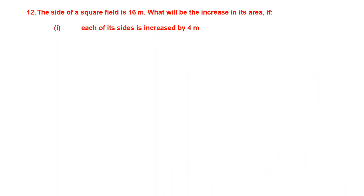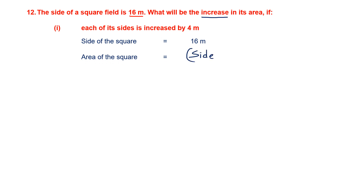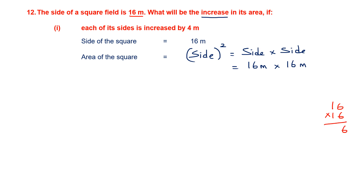Question 12. The side of a square field is given. We have been asked to find the increase in area if each of its sides is increased by 4 meters. The first step is finding the original area. Side of the square is 16 meters. Area equals side squared, which is side into side: 16 meters into 16 meters. 6 sixes are 36 carry 3, 6 ones are 6 plus 3 is 9. Second step: 1 six is 6, 1 one is 1. Adding up: 6, 9 plus 6 is 15 carry 1, giving 256. The original area is 256 meters squared.